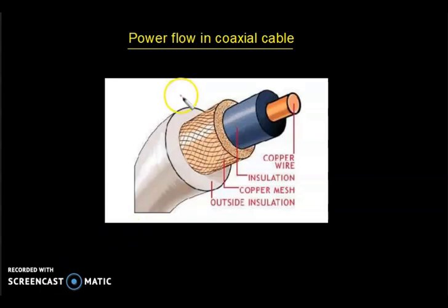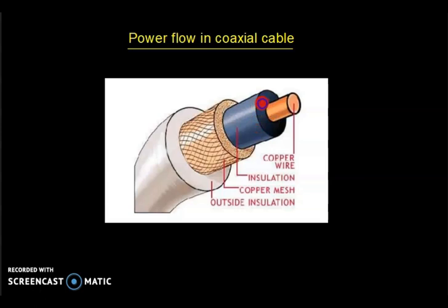Coaxial cable is a type of electrical cable consisting of an inner conductor surrounded by a conducting shield. Here we can see there is an inner conductor — a copper conductor surrounded by an insulating shield, which is a dielectric material. The coaxial cable also has a protective outer shield or jacket. The term coaxial refers to the inner conductor and the outer shield sharing a geometric axis.